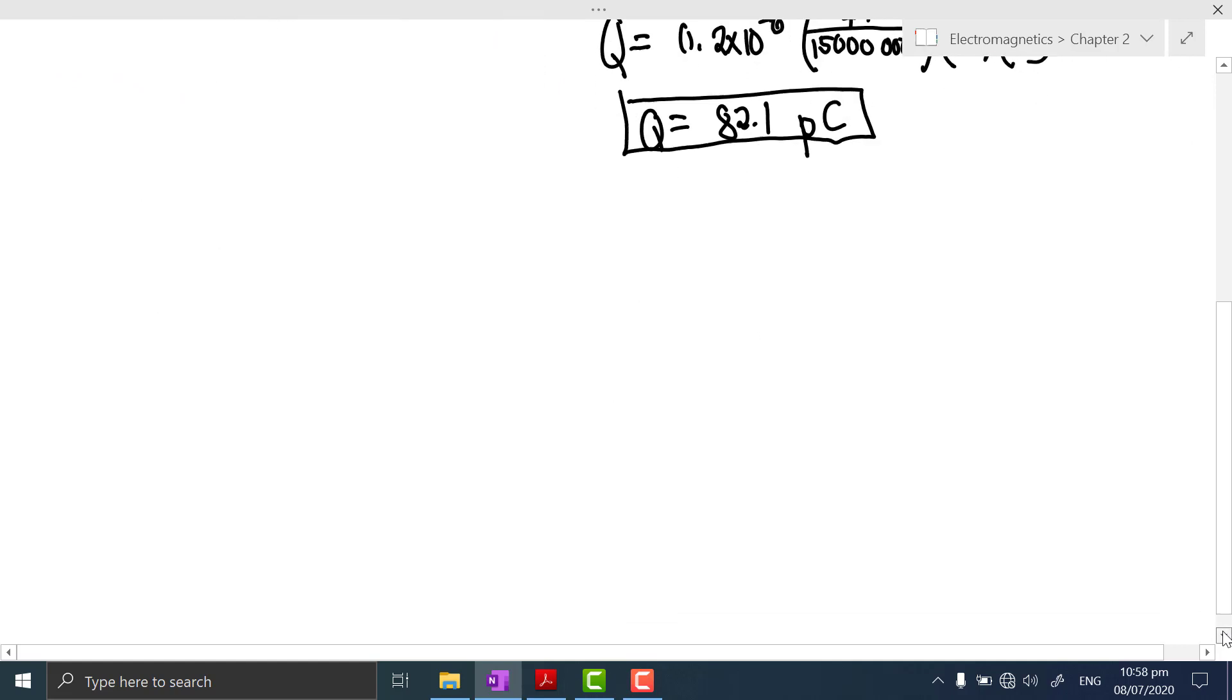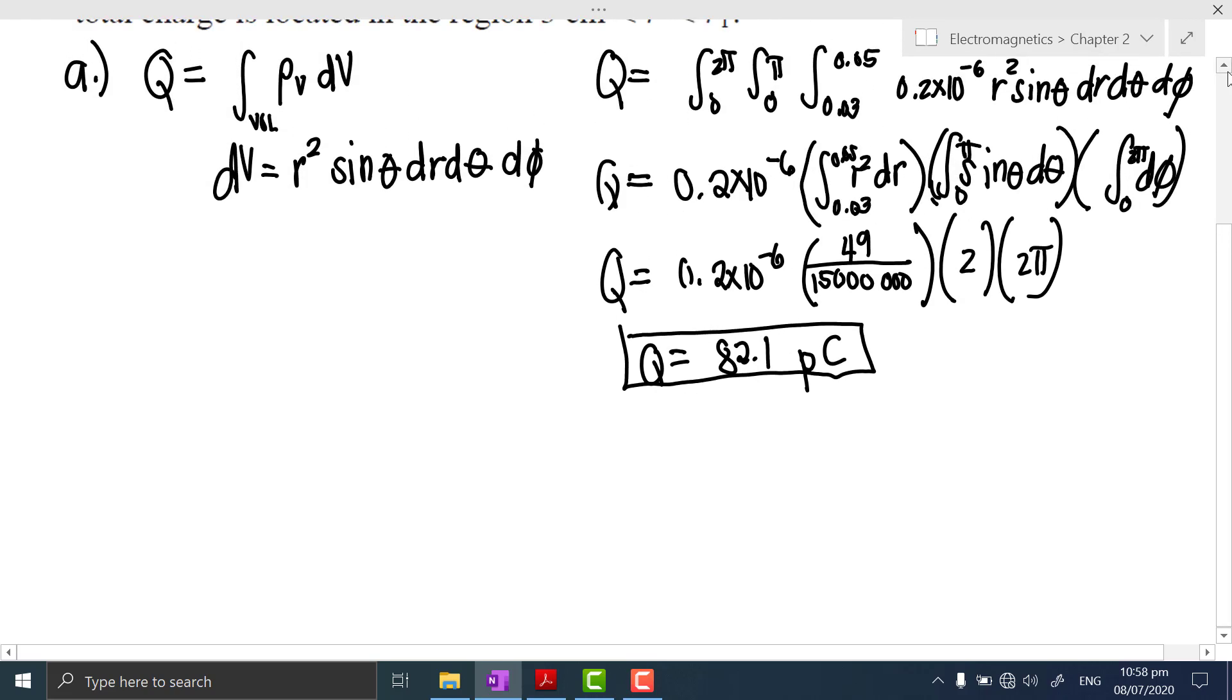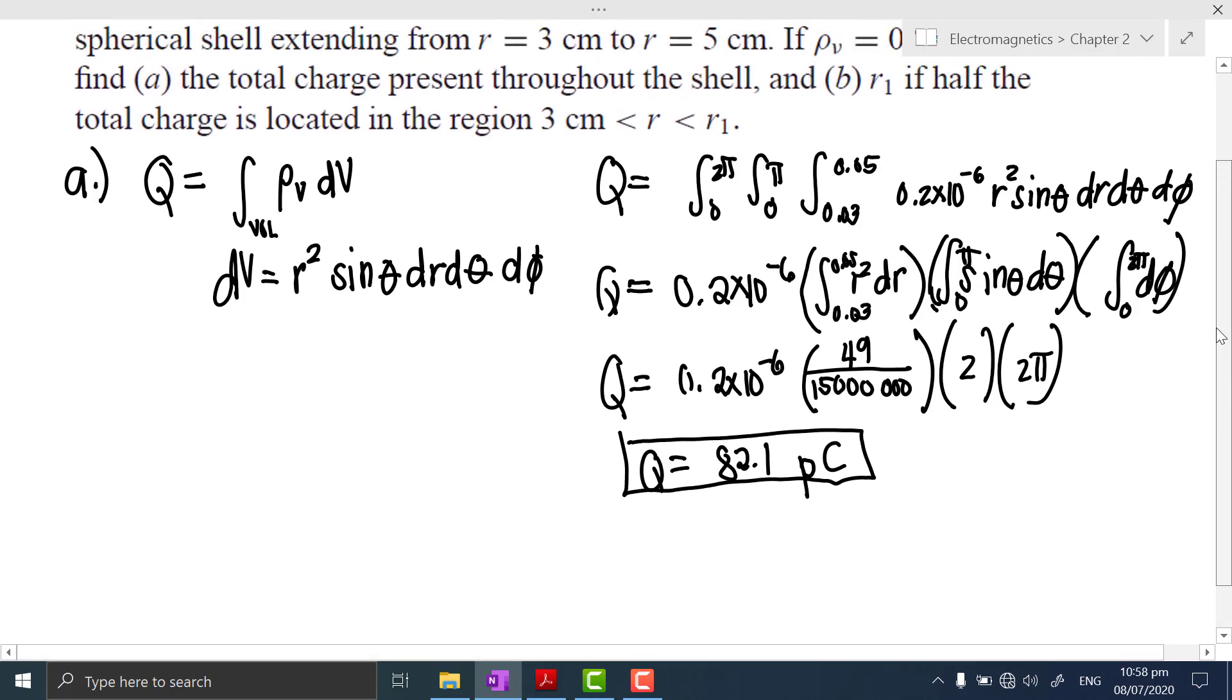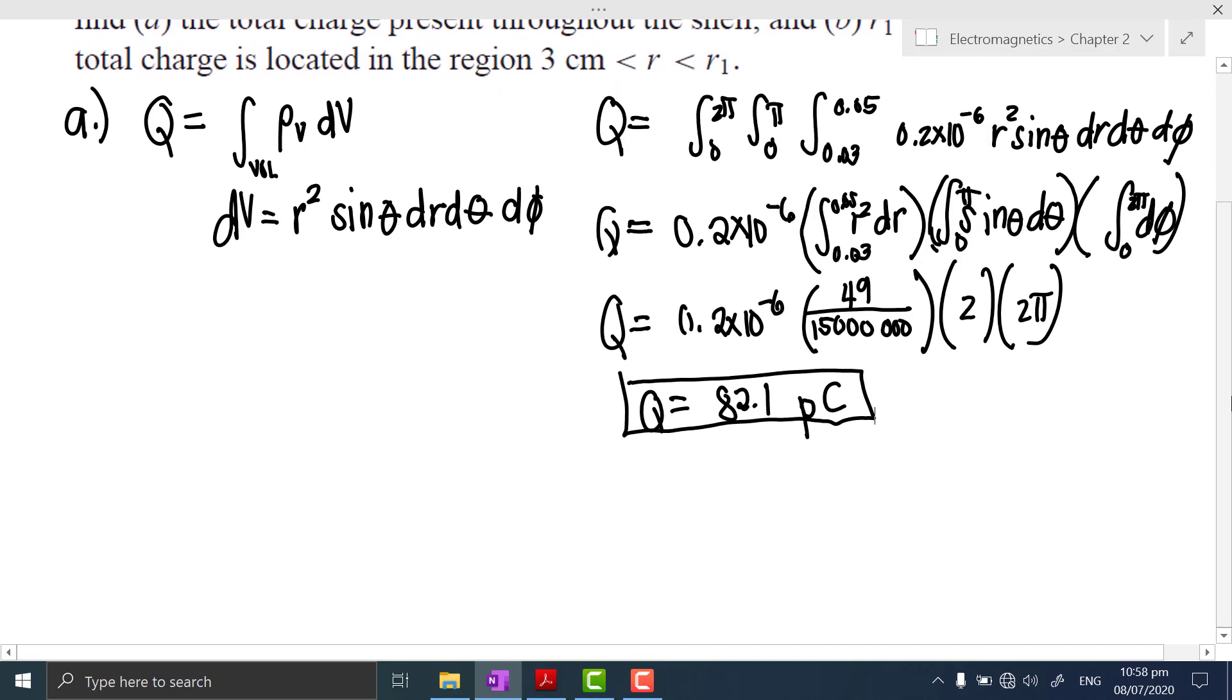For part B, we'll change the limits. Half of the charge that we got in part A is located at the limit from 3 centimeters up to R₁. So, what is R₁? For letter B, our total charge Q prime is equal to one half the total charge of this sphere from 3 centimeters to 5 centimeters. And this charge Q prime is evaluated from radius 3 centimeters to R₁, and we're finding R₁.